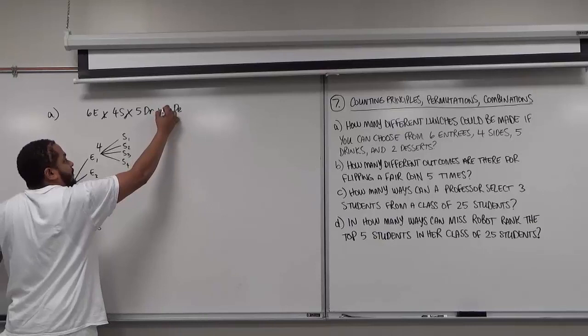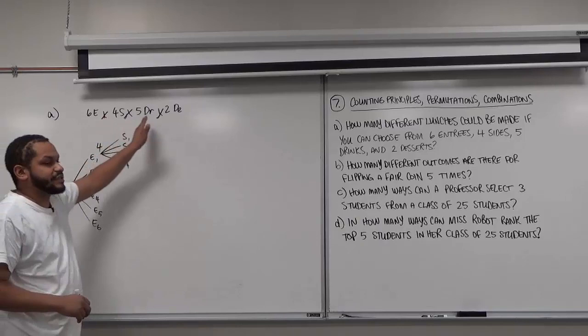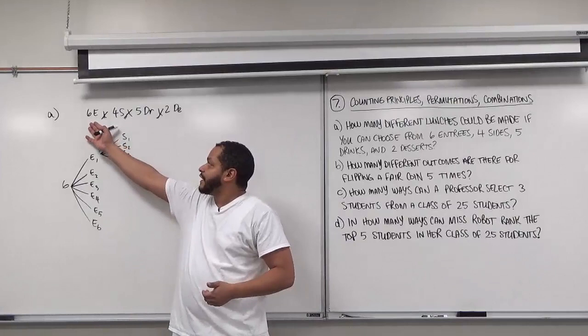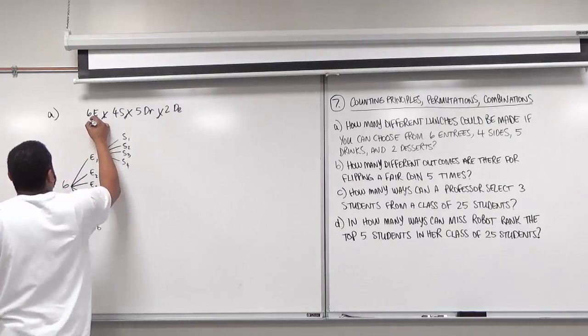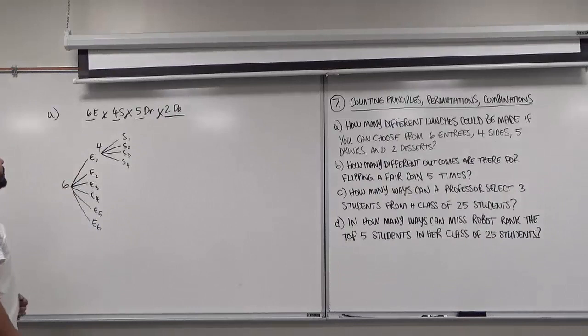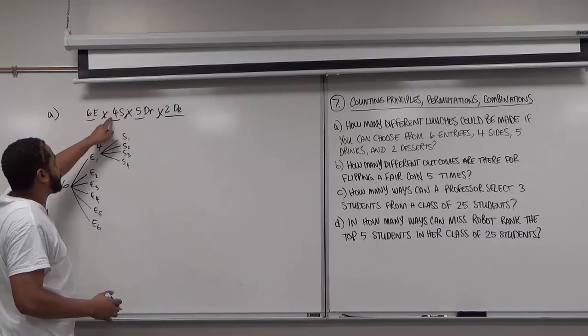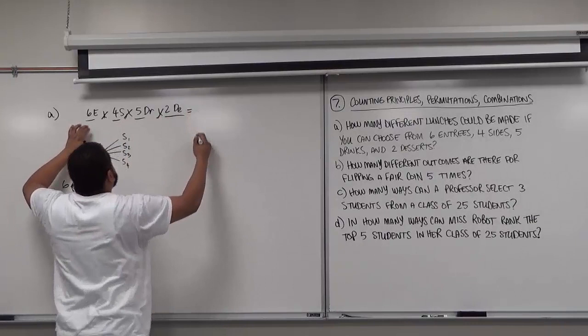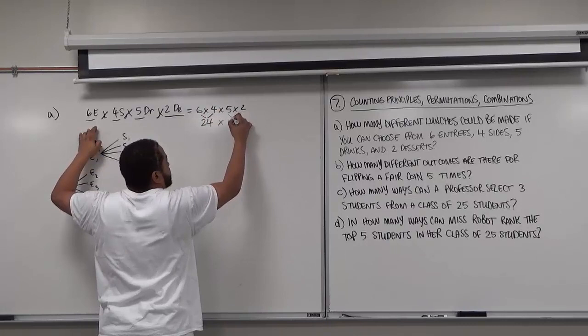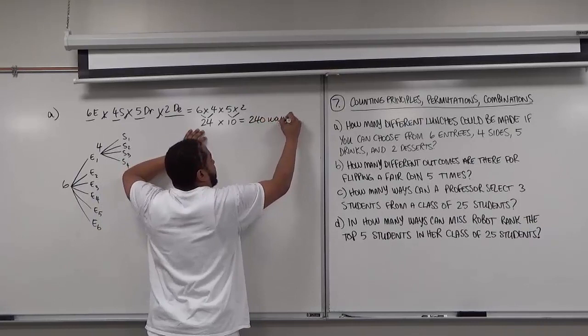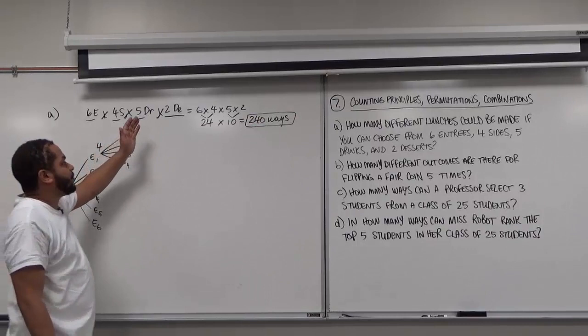The reason we're multiplying is because we cannot repeat these choices. If you go to a place and you're having lunch, you choose an entree, a side, a drink, and a dessert — you can't repeat picking an entree. Because they don't repeat, we multiply in a simplified fashion. This is a straightforward counting principle. So we take 6 times 4 times 5 times 2: 6 times 4 is 24, times 5 times 2 gives us 10, and 24 times 10 is 240. There are 240 different ways we can have a lunch.